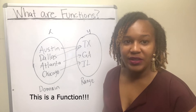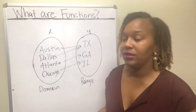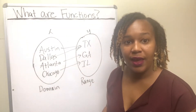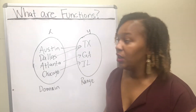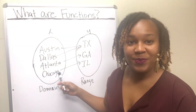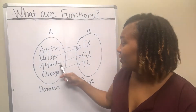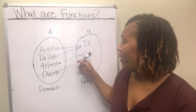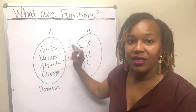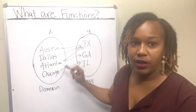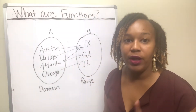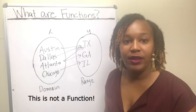But when will it not represent a function? If I have a city that maps to more than one state, that's when it will fail to be a function. There is an Atlanta, Texas — it's in East Texas somewhere. Since there is an Atlanta, Texas, the city named Atlanta maps to Georgia and also to Texas. Now I violate the rule that each element of the domain maps to exactly one element of the range. Atlanta maps to Texas and Georgia, so it no longer maps to exactly one, and this would not be a function.